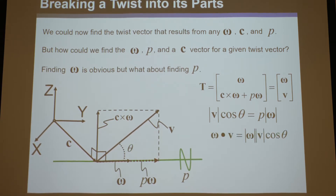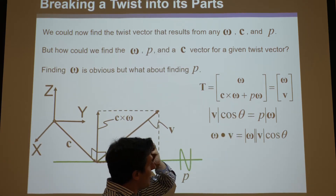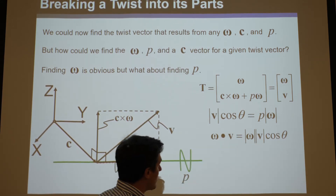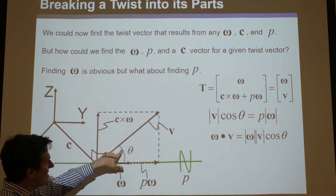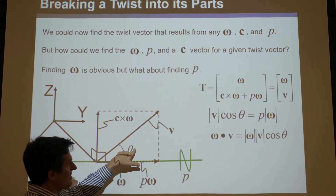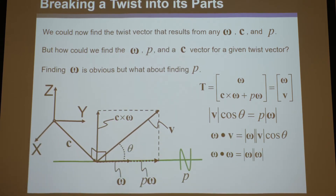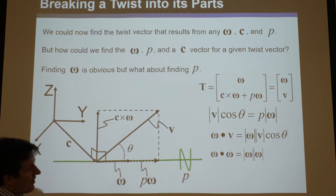Let's write something else that's true. You know that omega dot v, just from the dot product definition, is the magnitude of this times the magnitude of that times cosine the angle between them. Here's omega, here's v, and the angle between them is theta — same theta as that, cosine theta. We also know omega dot omega is just magnitude of omega times magnitude of omega, which is cosine zero, which is one.